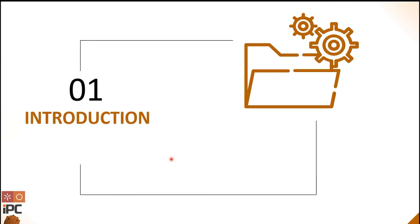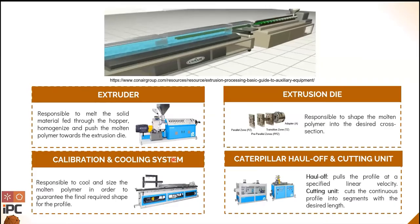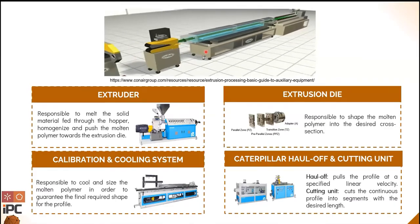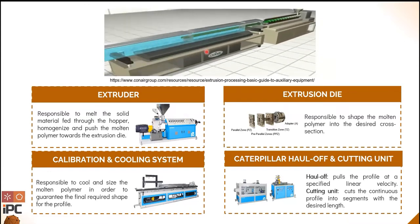Polymeric material-based products have a significant effect in several fields such as health, mobility, civil construction, energy, and packaging. Therefore, huge studies have been carried out in this area. The extrusion process, particularly profile extrusion, is one of the available process techniques used in the production of a wide range of polymer-based products. Extrusion is a steady-state process that transfers a polymer raw material into a constant cross-section product.